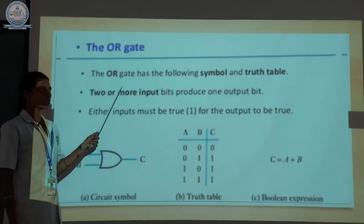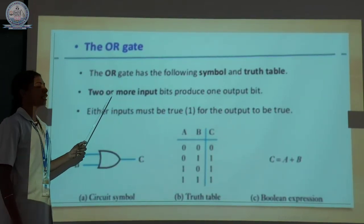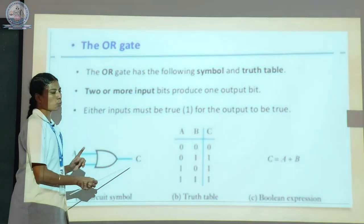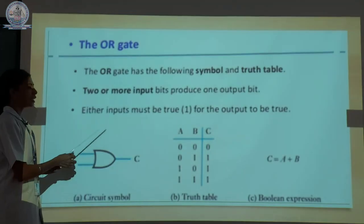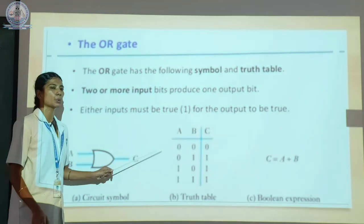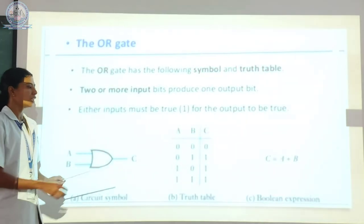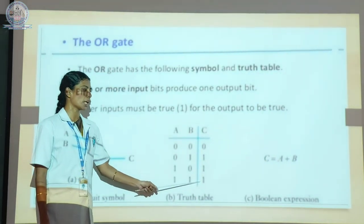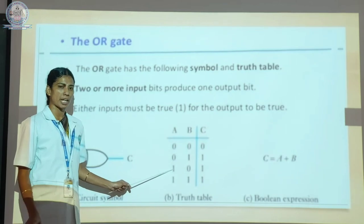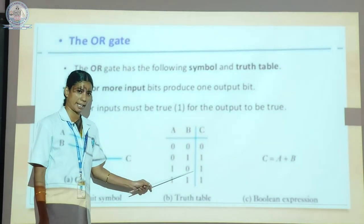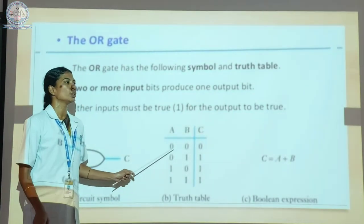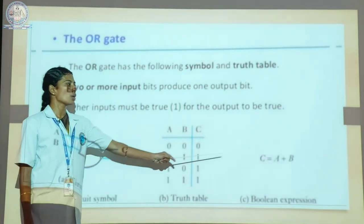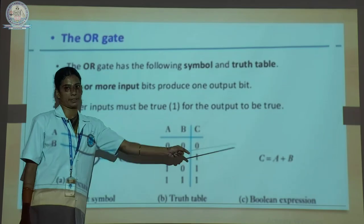Next one is the OR gate. The OR gate has the following symbol and truth table. Two or more inputs produce only one output signal. Totally 4 input combinations are produced. If both inputs are high, the output is also high. If any one of the inputs is high, the output is also high. If both inputs are low, the output is also low. The Boolean expression for the OR gate is C is equal to A plus B.